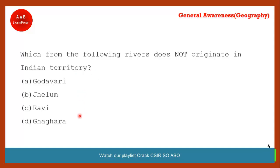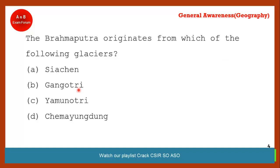Coming to the next question: the Brahmaputra originates from which glacier? The correct answer is the Chima Yangdang glacier, which is in Tibet, China. Brahmaputra originates from this glacier. Gangotri is for Ganga, and Yamunotri is for Yamuna.